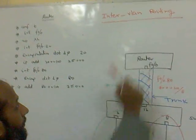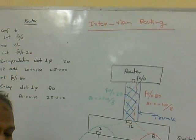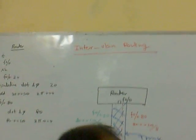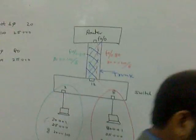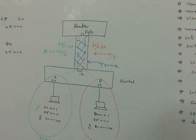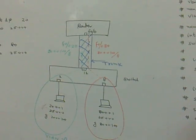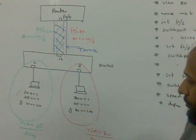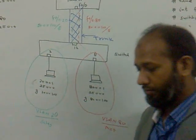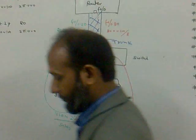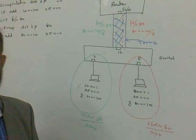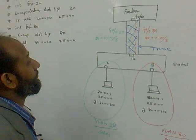The topic is inter-VLAN routing. Inter-VLAN routing means we can provide communication between different VLANs with the help of a router or Layer 3 devices.